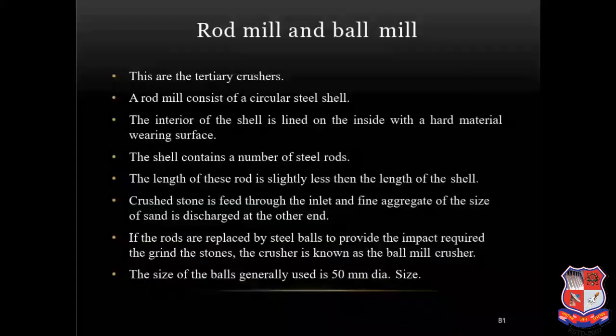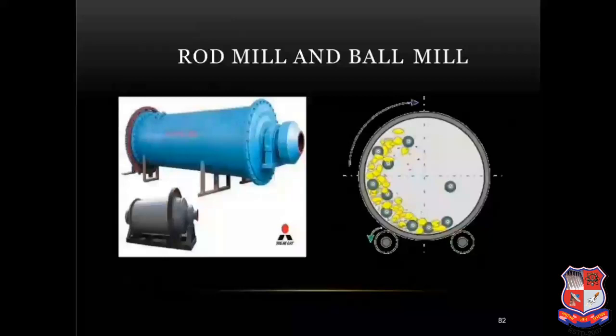Rod mill and ball mill are tertiary crushers. A rod mill consists of a circular steel shell lined on the inside with a hard wearing surface. The shell contains a number of steel rods whose length is slightly less than the length of the shell. Crushed stone is fed through the inlet and fine aggregate of the size of sand is discharged at the other end. If the rods are replaced by steel balls to provide the impact required to grind the stones, the crusher is known as a ball mill. The size of ball generally used is 50 mm in diameter.